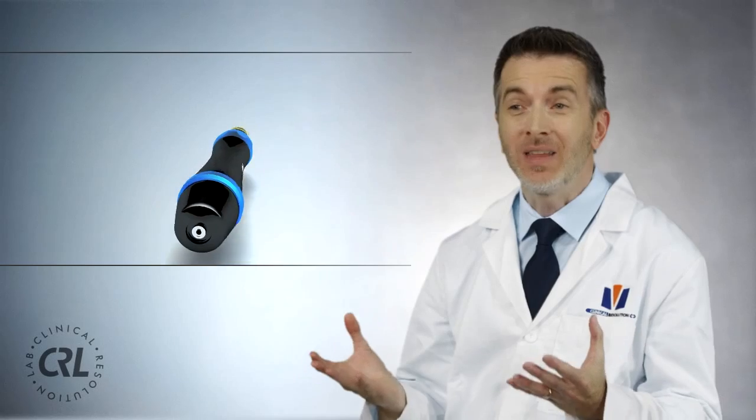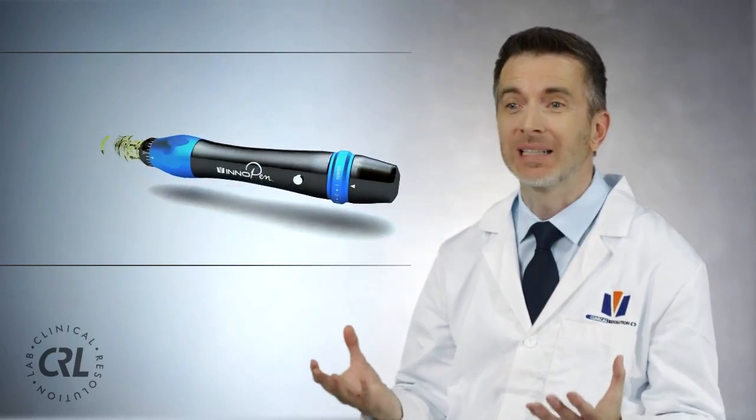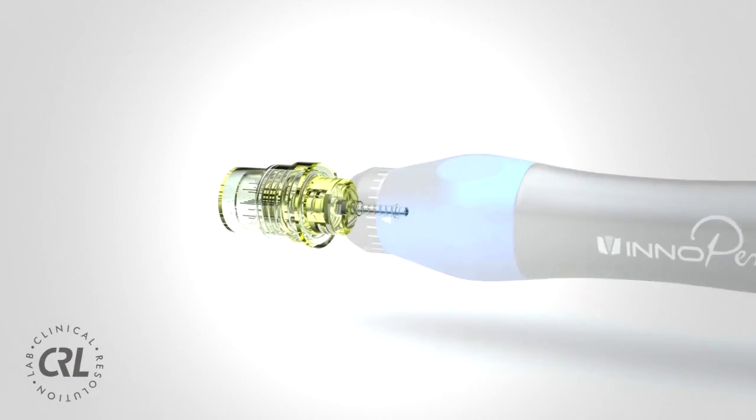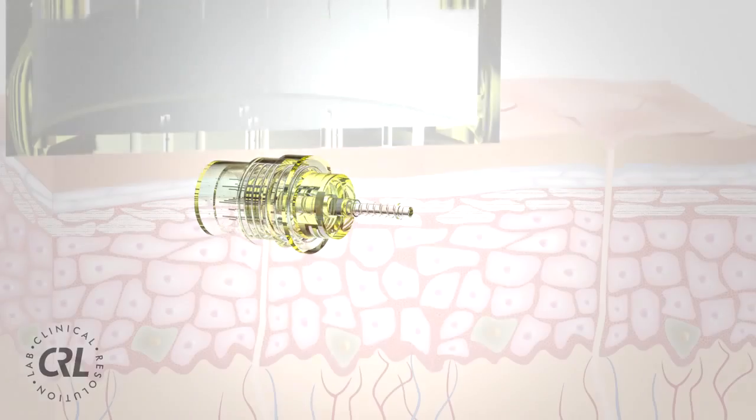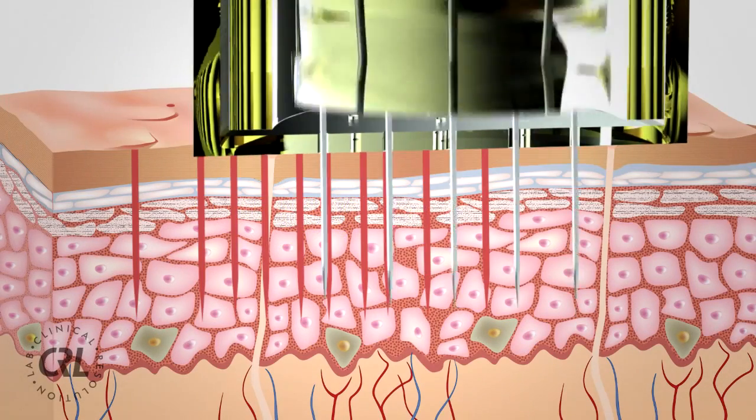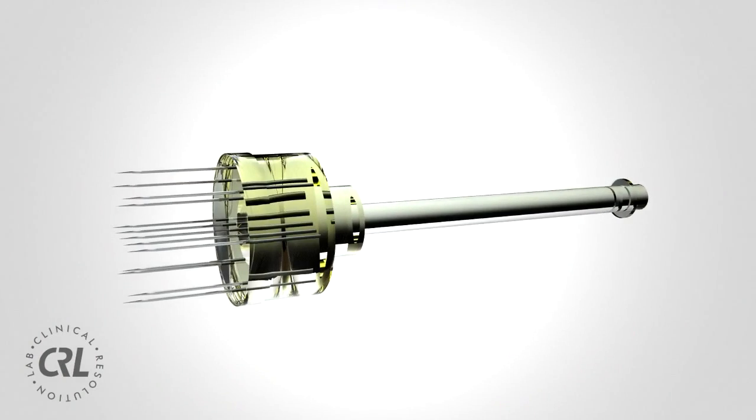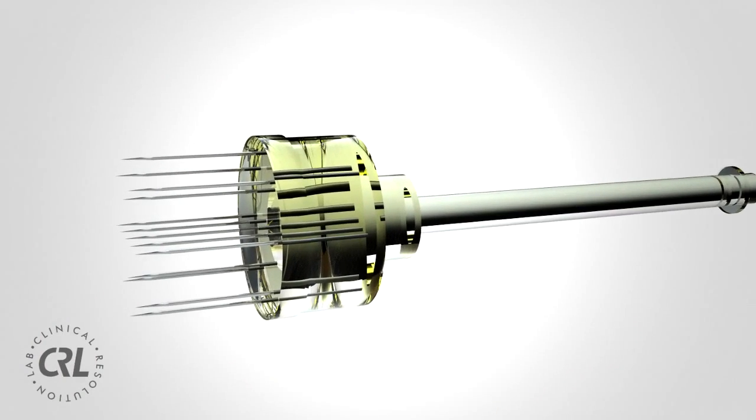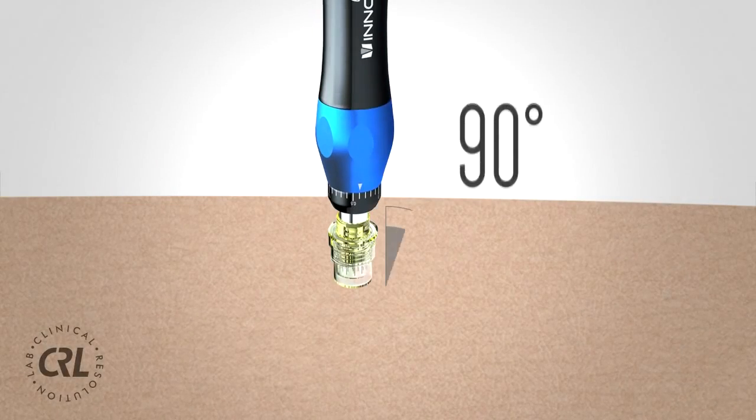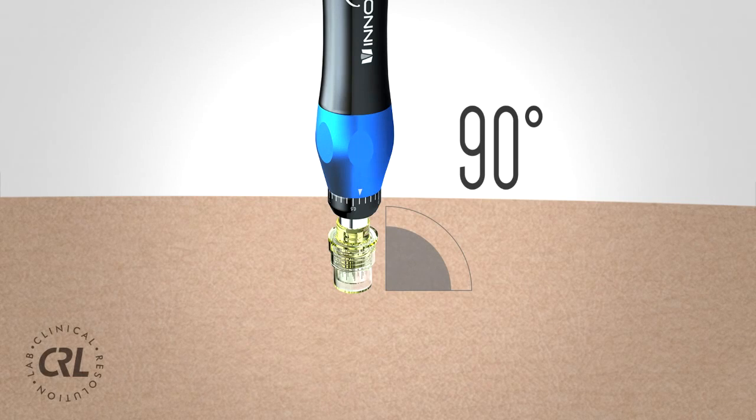Now let's take a closer look at the Innopen itself. The Innopen is an automated microneedling device with a special patented needle cartridge that creates pulsating stamp-like motions to cause microinjury to the skin. Innopen uses medical-grade needles precisely spaced to perforate the skin at a direct 90-degree angle.